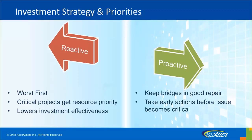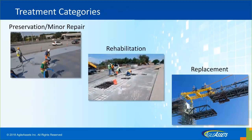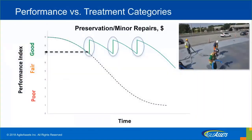Let's see how we can achieve a proactive approach using performance measures. In general, we have different treatment categories. Depending on your agency, you can define different categories, but broadly we can define three: preservation or minor repairs, major repair or rehabilitation, and replacement. Some states have more — for example, New York has eight treatment categories. Let's limit it to these three and see how they connect to performance measures.